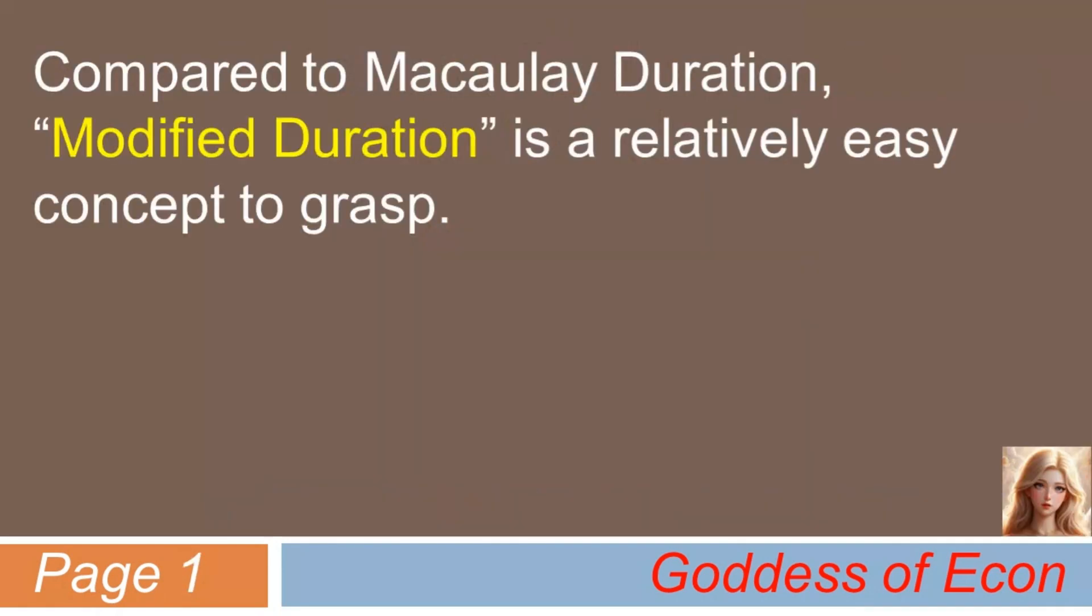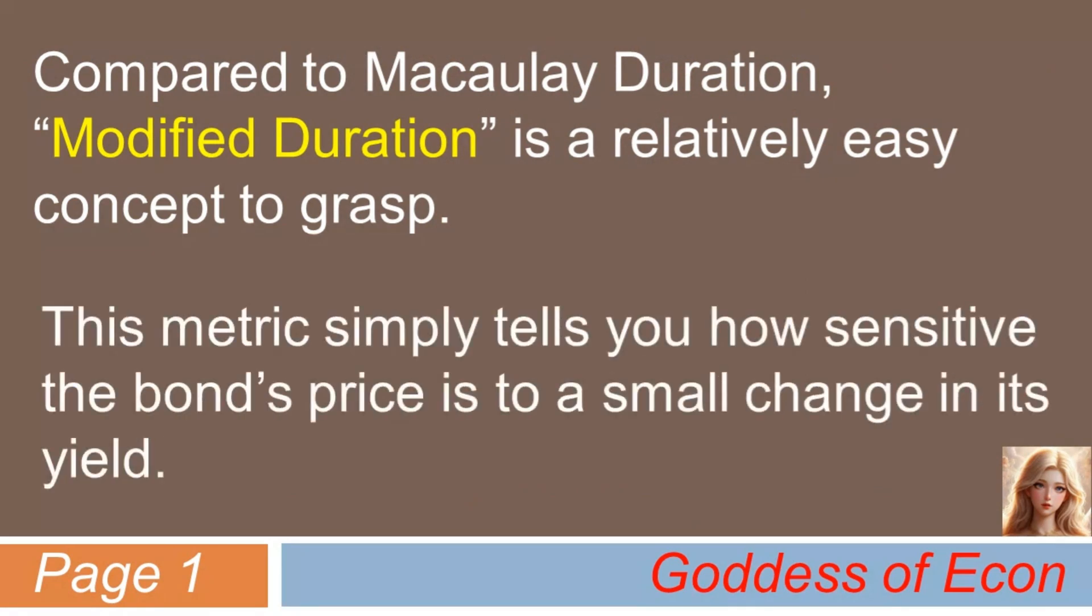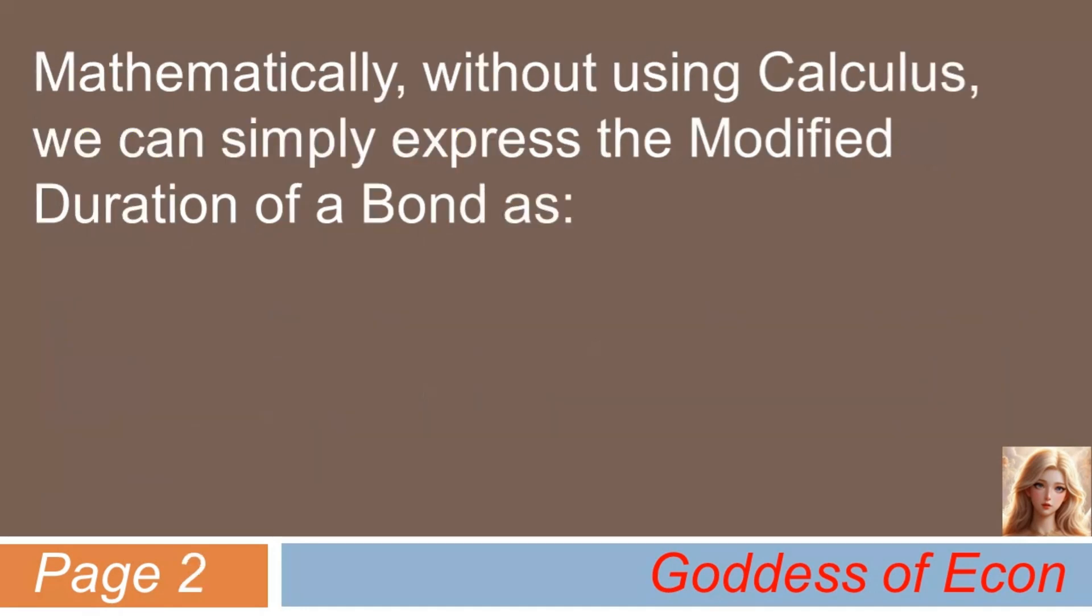Let me begin by saying that, compared to Macaulay duration, modified duration is a relatively easy concept to grasp. This metric simply tells you how sensitive the bond's price is to a small change in its yield. Mathematically, without using calculus, we can simply express the modified duration of a bond as minus 1 over P times delta P over delta r. For those who are not mathematically minded, this simple definition may not look simple. But don't worry mathphobes, the goddess of Econ will explain it thoroughly for you.